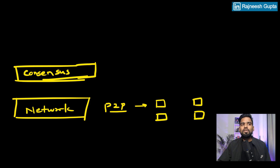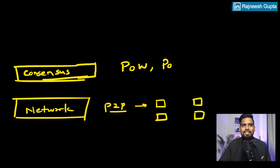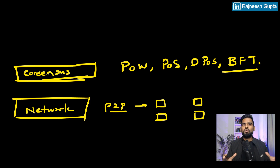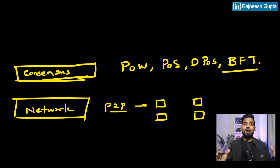On the consensus layer you find multiple consensus mechanisms. For Bitcoin that's Proof of Work. There's Proof of Stake, Delegated Proof of Stake, and BFT methods as well. These are all methods to make sure all the nodes agree, and it's actually needed because we are having a decentralized network.